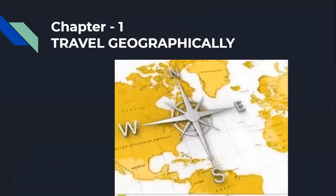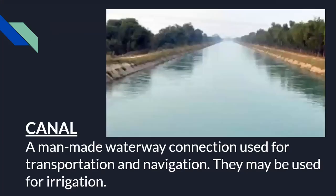To start with, we have 'Travel Geographically' as our first chapter of the class. Everybody likes to travel, but do people actually know the names of the landforms they are moving around? Let's have a look at some of the landforms. Canal — a man-made waterway connection used for transportation and navigation. They may also be used for irrigation.